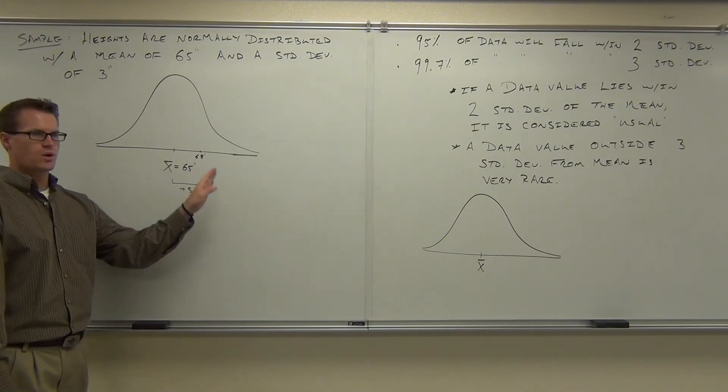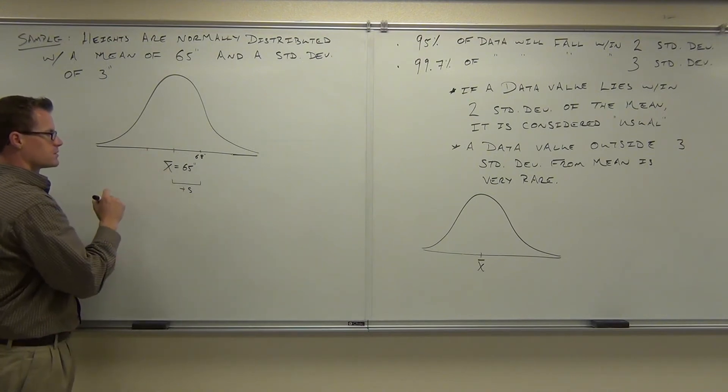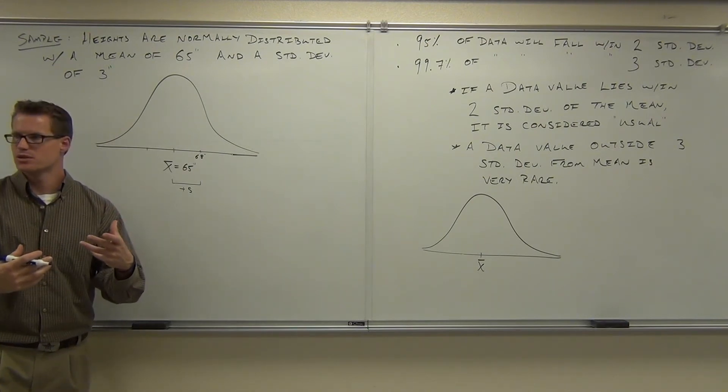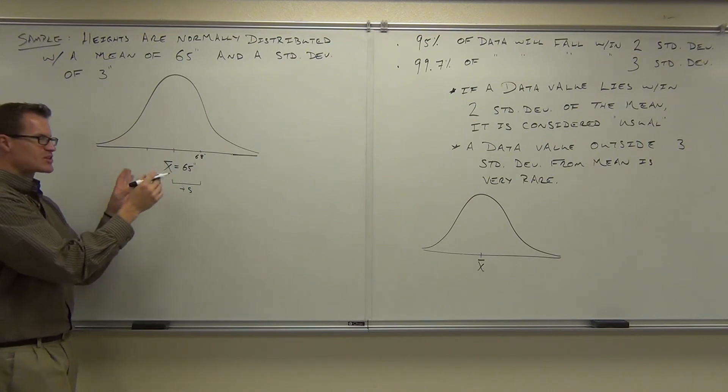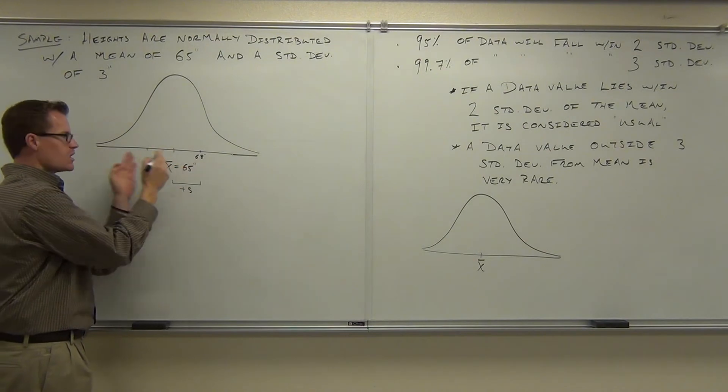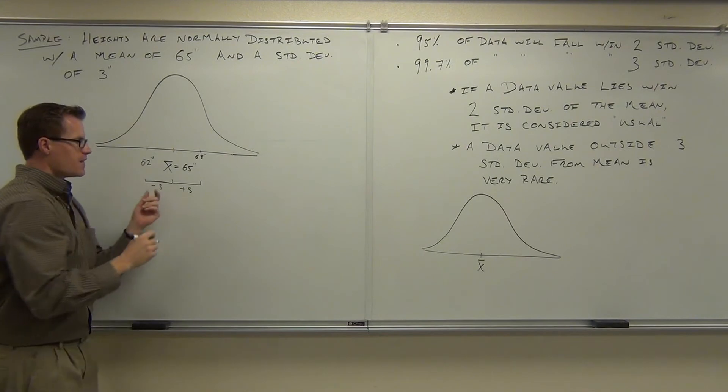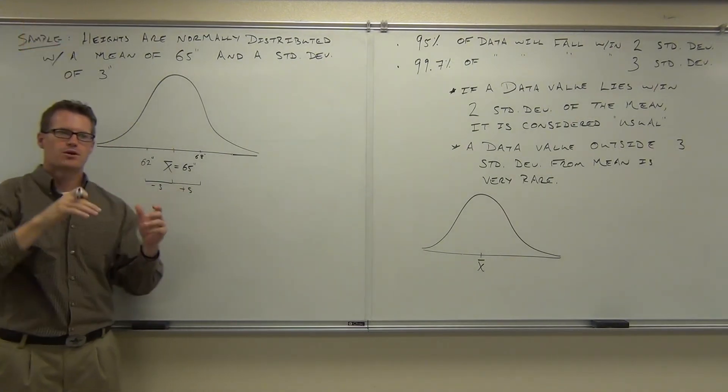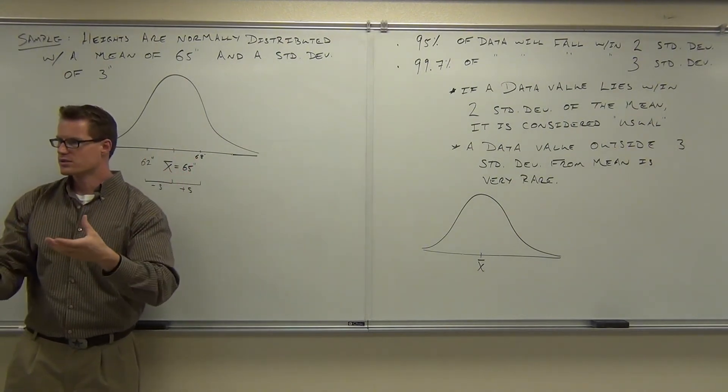Now, this gives us one standard deviation to the right. Can you tell me what's one standard deviation to the left? Sixty-two. Are you all understanding how I'm getting these numbers? I'm not Harry Potter today. This is not my wand. This is just going with standard deviation. So if our standard deviation is three inches, we go to the right three inches, we go to the left three inches, minus S, that gives us within one standard deviation. Raise your hand if you understand that. So the range of 62 to 68 inches is within one standard deviation of the mean.